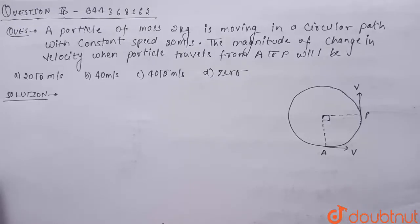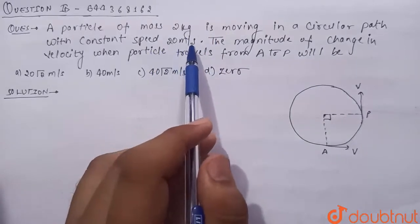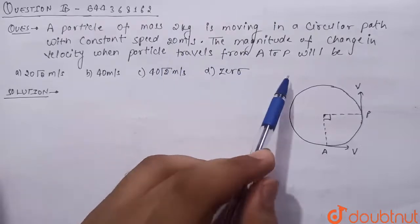Hello guys, so today's question is: a particle of mass 2 kg is moving in a circular path with constant speed 20 meter per second. The magnitude of change in velocity when particle travels from A to P will be.